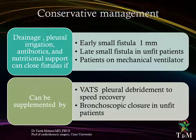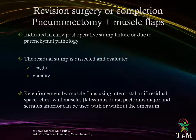Conservative management encompasses drainage, pleural irrigation, targeted antibiotics, and nutritional support, which has shown to help close small fistulas — whether early or late — or in patients on mechanical ventilators. This approach can be supplemented by video-assisted thoracoscopy with pleural debridement to speed recovery. Bronchoscopic closure is used in unfit patients, while revision surgery or completion pneumonectomy plus or minus muscle flaps is indicated in early post-operative stump failure or due to lung pathologies.